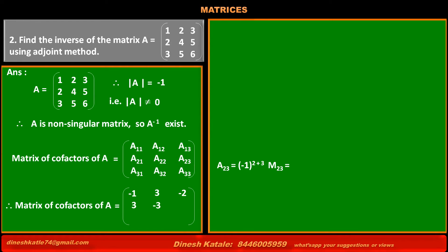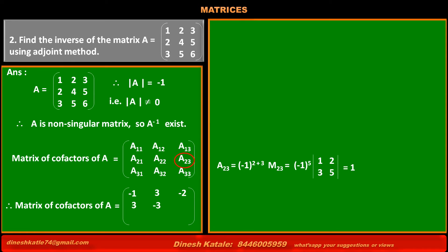Cofactor of element at second row, third column, A23 = (-1)^(2+3) × minor M23 = (-1)^5 × (1×5 - 3×2) = -1 × (5 - 6) = -1 × (-1) = +1. Thus the value of cofactor A23 is 1.